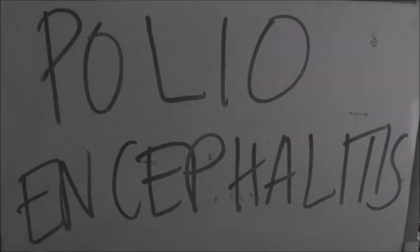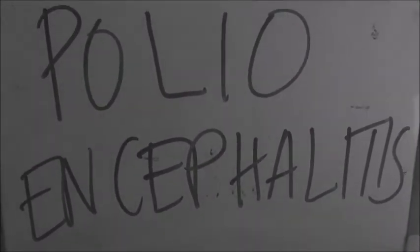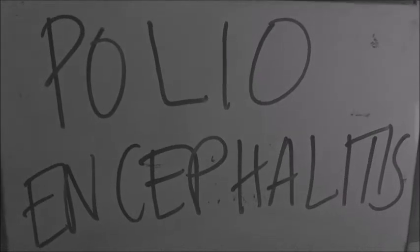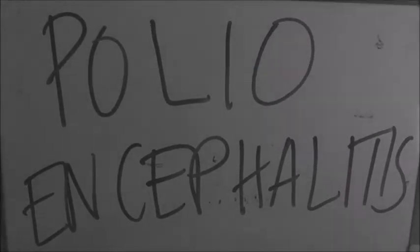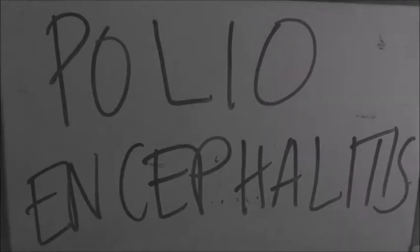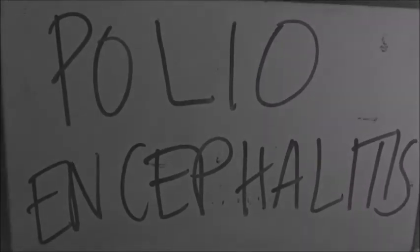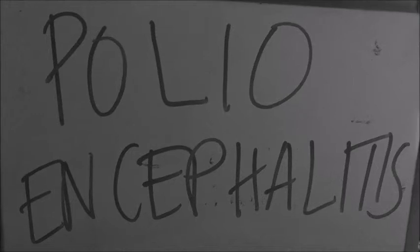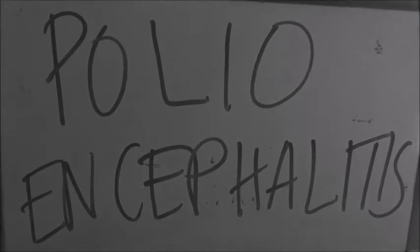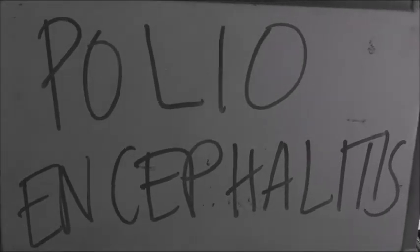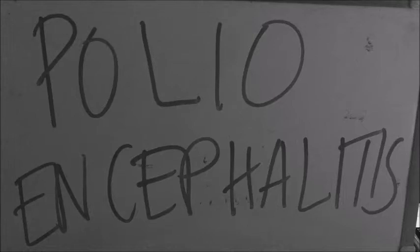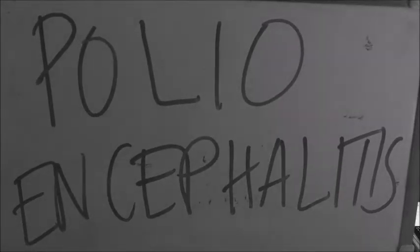Polio encephalitis is a very rare kind of polio. Symptoms may include irritability, delirium, disorientation, tremors, convulsions, and paralysis of the upper motor neuron.